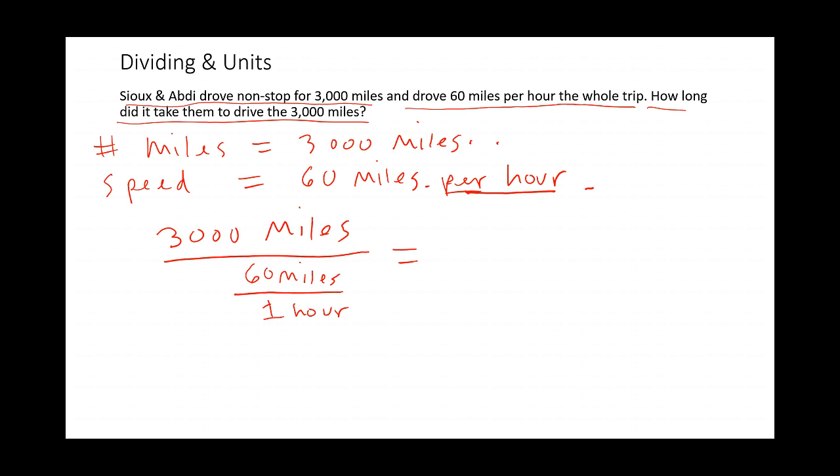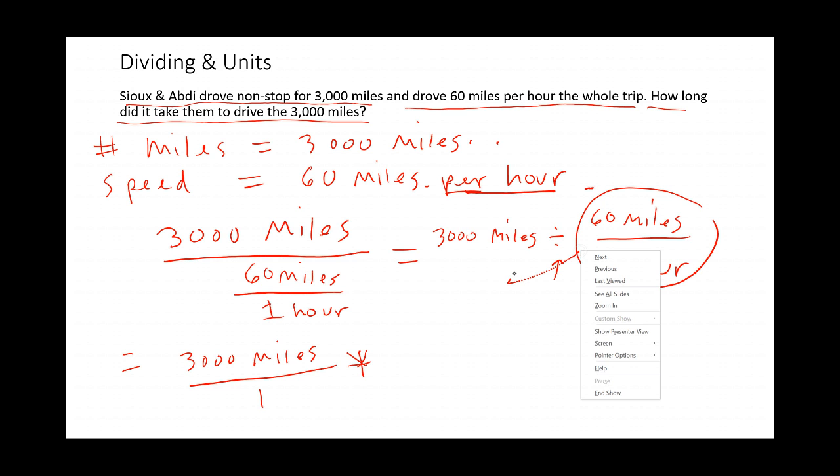What really happens when I do this is I could rewrite this. 3,000 miles divided by 60 miles per one hour. Notice this is division. So we can invert the second fraction or the denominator. So down here, I'm going to say 3,000 miles, and I could have a 1 here. Any number over 1 is itself. But now I'm going to use multiplication, and I have to flip this. So 1 hour over 60 miles.